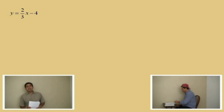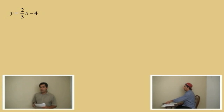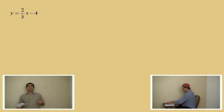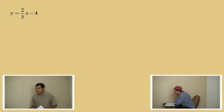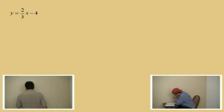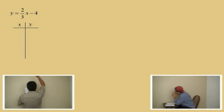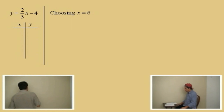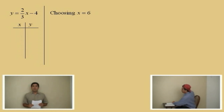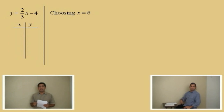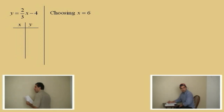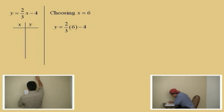Now, here we are moving on to a linear equation again with two variables. But this is a special form — some of you might know this is called the slope-intercept form. We're going to choose a value for x. Charlie, give us a value for x. 6. Okay, we're going to choose x equals 6. 6 was a good choice for x because we're dealing with fractions — 3 goes into 6 two times, and 2 times 2 is 4.